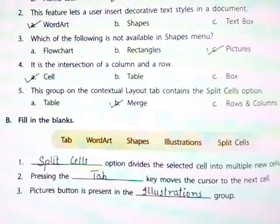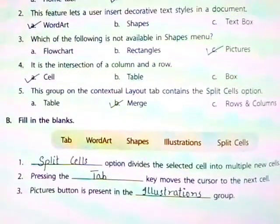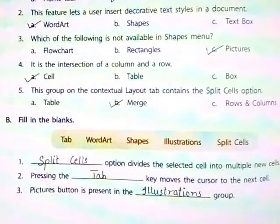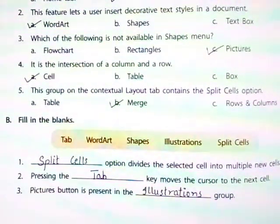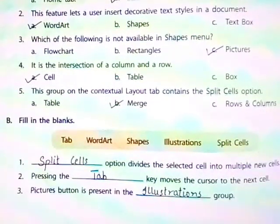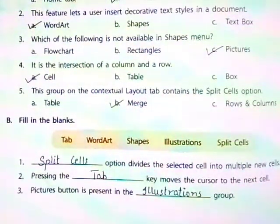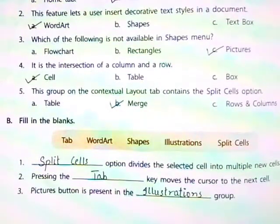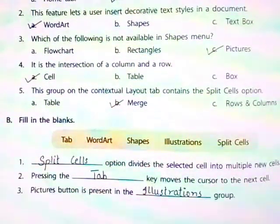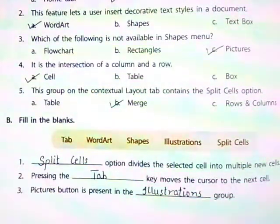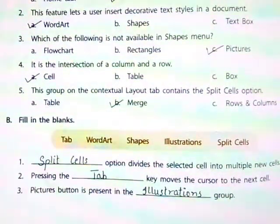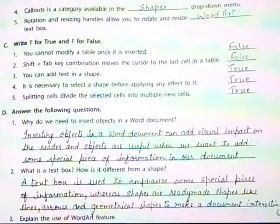Part B: Fill in the Blanks. First, the blank option divides the selected cell into multiple new cells. Answer: Split Cells. Second, pressing the blank key moves the cursor to the next cell. Answer: Tab. Third, Pictures button is present in the blank group. Answer: Illustrations group.